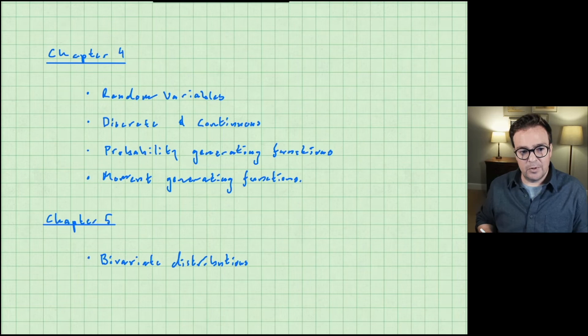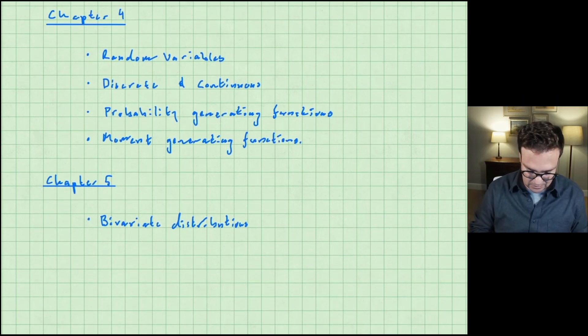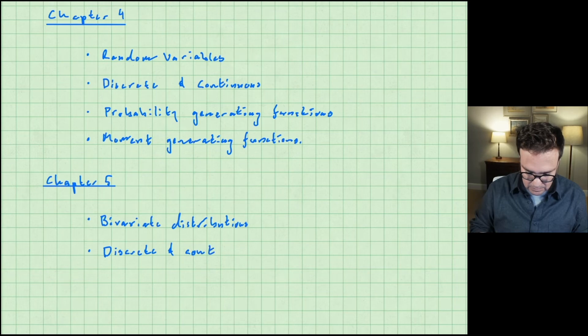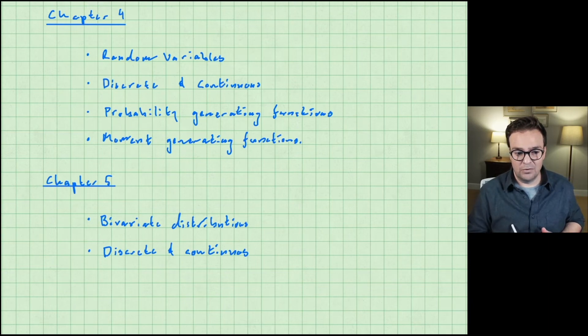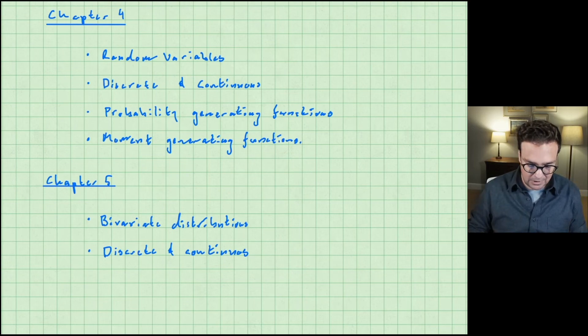These come up when we talk about pairs of random variables. We're going to again introduce both discrete and continuous versions of this topic and then we're going to introduce a few special terms like independence and covariance and correlation. We're going to finish off the chapter talking about random vectors.